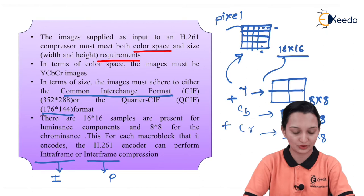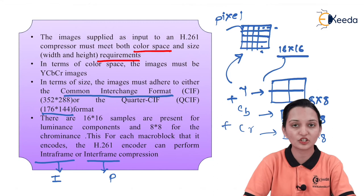There are two types of framing structures used for H.261 encoding and decoding. We will try to understand these with the help of a block diagram — the same theory illustrated in diagram form.